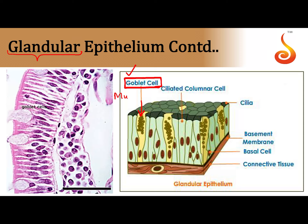The secretion of the goblet cell is referred to as mucus, so since it secretes mucus it is referred to as a glandular cell. The job of secretion is being performed by one single cell, and as a result it is referred to as a unicellular gland. Please remember: the goblet cell is an example of a unicellular gland.